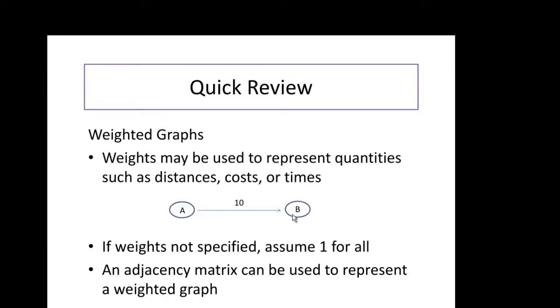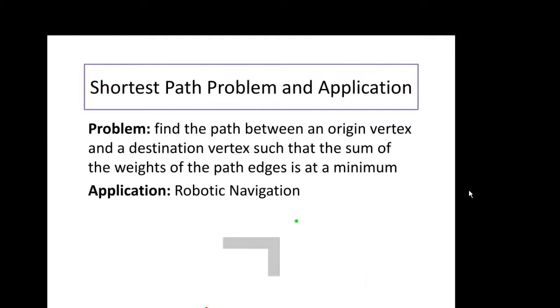In between two nodes, if the weights are not specified, we assume that the weight would be 1 for all. So that would mean there would be no number here and it would just be a line. Since there is no number, we can assume it would be 1. We're going to use an adjacency matrix to represent the weighted graph. So the problem: find the path between the origin and a destination such that the sum of the weights along the path is at a minimum.